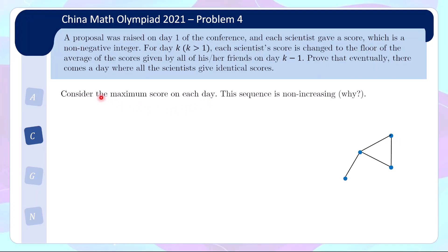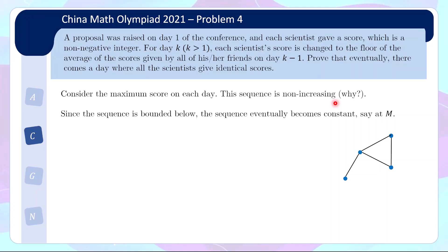It turns out we want to consider the maximum score each day. I claim that the sequence of maximum scores as days pass is non-increasing. Suppose the current maximum score is A. The next day, any vertex looks at the average of its neighbors' scores, which cannot be bigger than A, and then you round down, so again it cannot be bigger than A. This proves the next day's maximum score cannot exceed A. Since this sequence is non-increasing and bounded below by 0, it must eventually become constant. Let's say the constant value is capital M, and this happens from day capital K onwards.